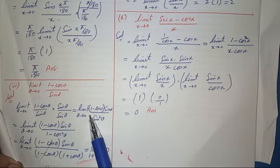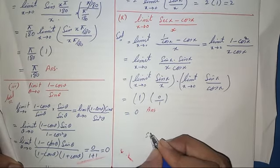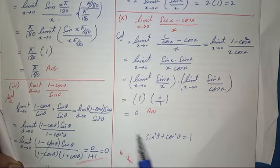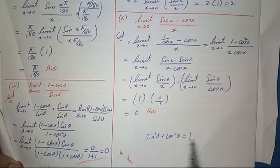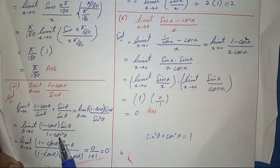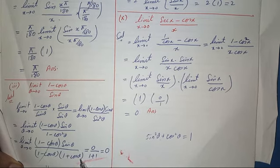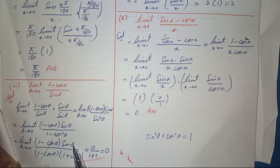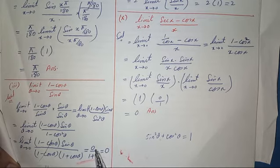We have limit theta tends to 0 of (1 minus cos theta) over sine squared theta. Now (1 minus cos theta)(1 plus cos theta) equals 1 minus cos squared theta, using the a² minus b² formula. After cancellation, the remaining term is sine theta over (1 plus cos theta). Substituting theta equals 0: sine 0 is 0 and cos 0 is 1, so we get 0 over (1 plus 1) equals 0 over 2, which equals 0.